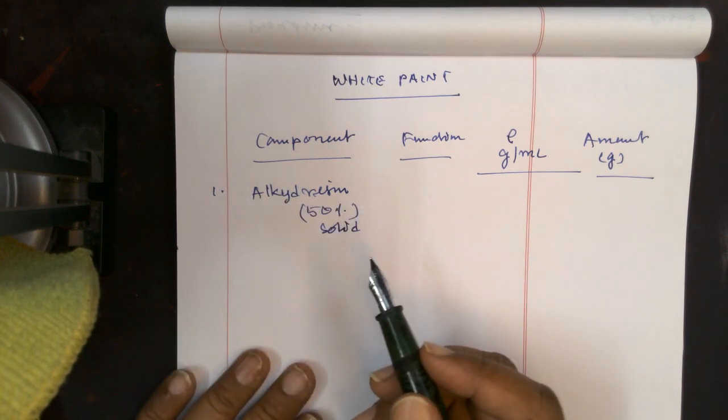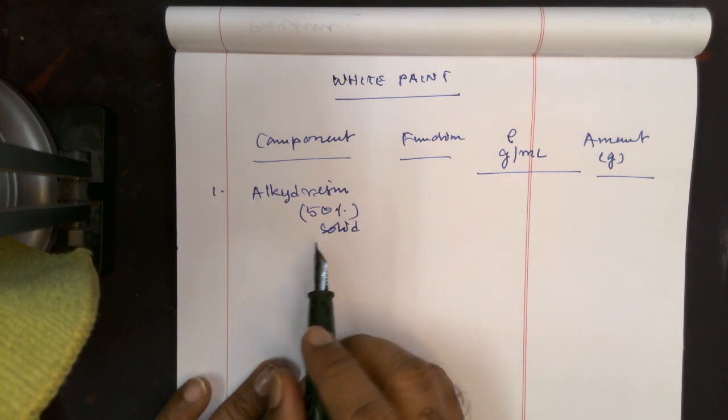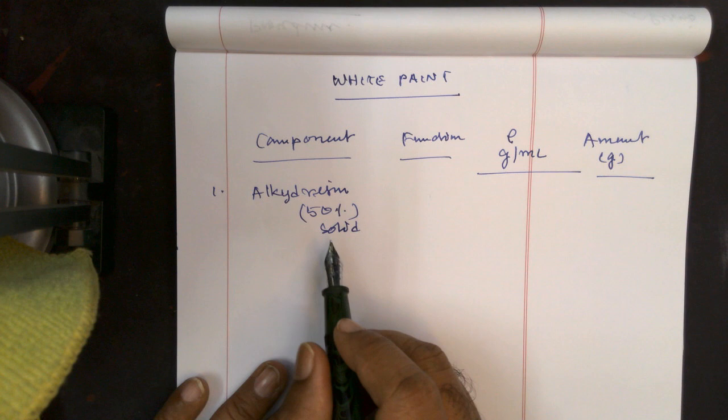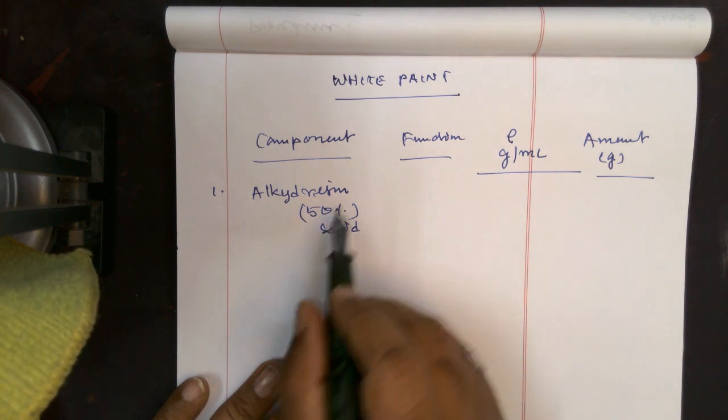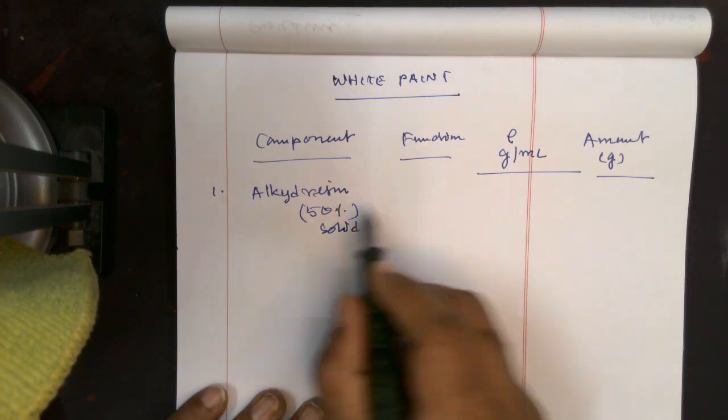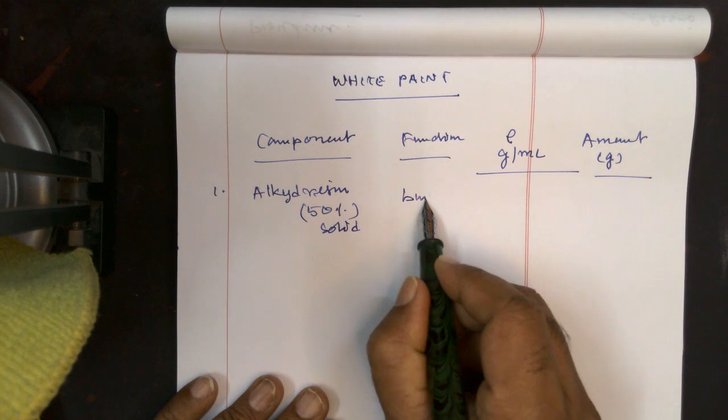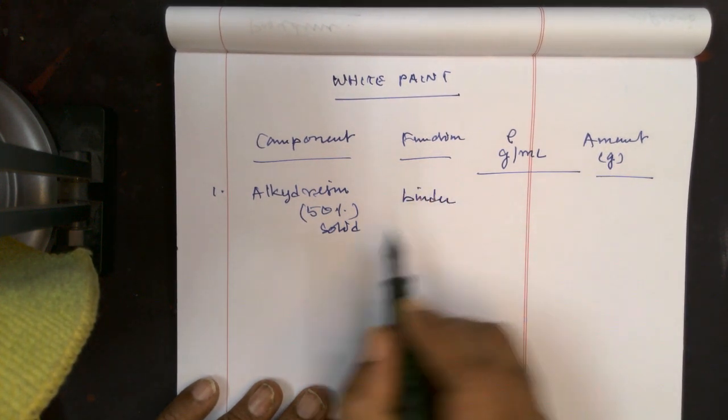The remaining 50% is used for making up of the resin using suitable thinner. Thinner is the combination of solvents. So we have to consider only the solid part. So this alkyd acts as binder.